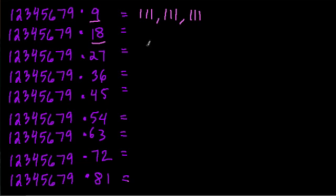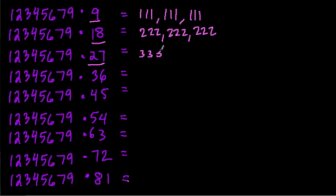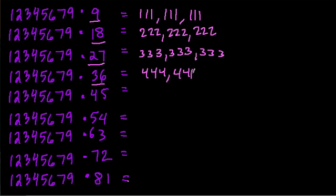What about the second product of 9, which is 18? Well, then we get all 2s. And you can predict that the third product will give us all 3s. Isn't it cool that this actually works? And then the fourth product will give us all 4s. For the fifth product, you might have guessed it — all 5s.